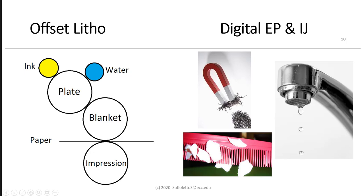Offset lithography is the most popular printing process. It works on the principle that ink and water don't readily mix — like oil and vinegar in a salad dressing. The plate is a planographic, flat surface plate. The separation between image and non-image area is done chemically with the ink-water balance. The image transfers from the plate to the blanket — an indirect transfer — and then from the blanket to the paper with an impression back cylinder beneath it. This can be either sheet-fed or web-fed.